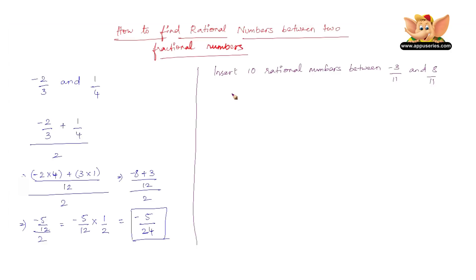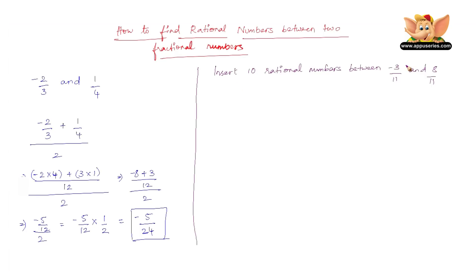The simplest thing here is that the denominators are already equal, that is 11. So between minus 3 and 8 there are a lot of numbers present. Let us see the numbers that are present between minus 3 and 8.